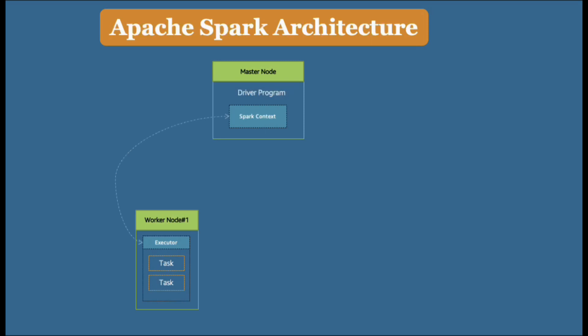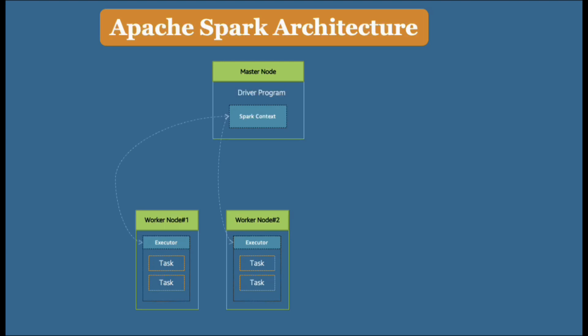Next, there is a worker node — this is where the executor runs. The executor is a set-up process that runs the computations and also stores the data for the applications. The driver program sends the Spark application code, which could be a JAR file or Python files. Finally, the Spark context object sends the set of tasks to be completed by each executor on the respective nodes. We can have multiple Spark executors running on different nodes in the cluster.